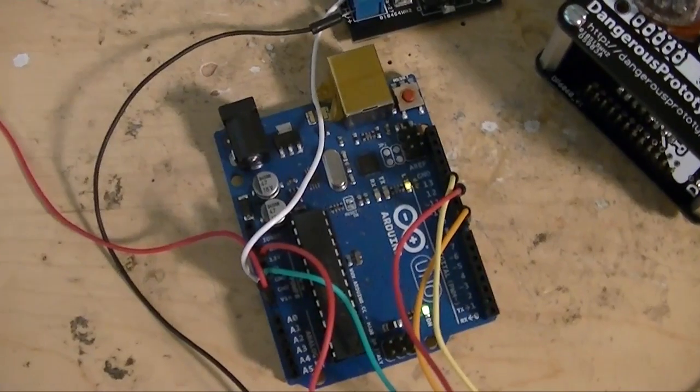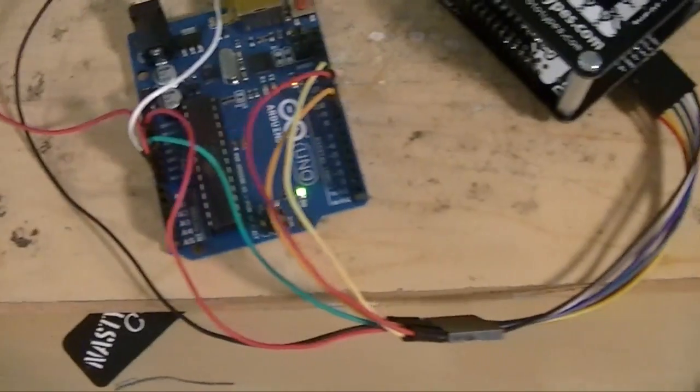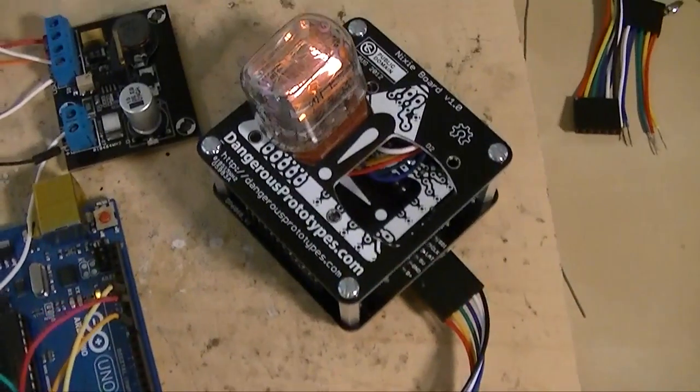Here we're connected to an Arduino, Shock's absolute favorite microcontroller. We're running a simple 595 library. We're just writing the numbers 1 through 10 continuously into the tube.